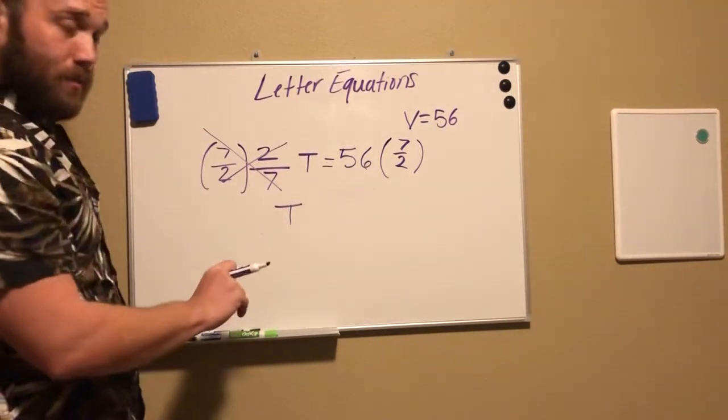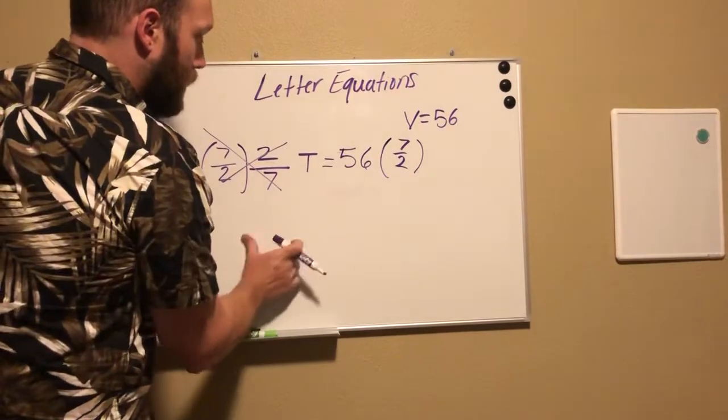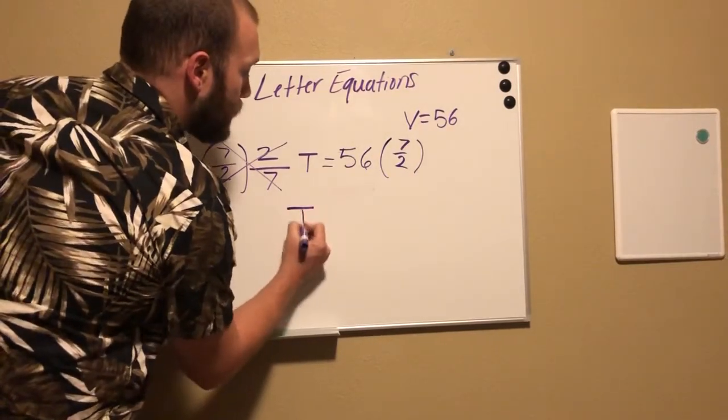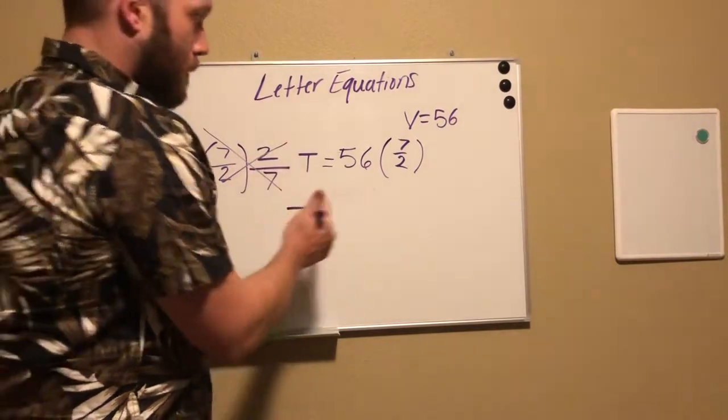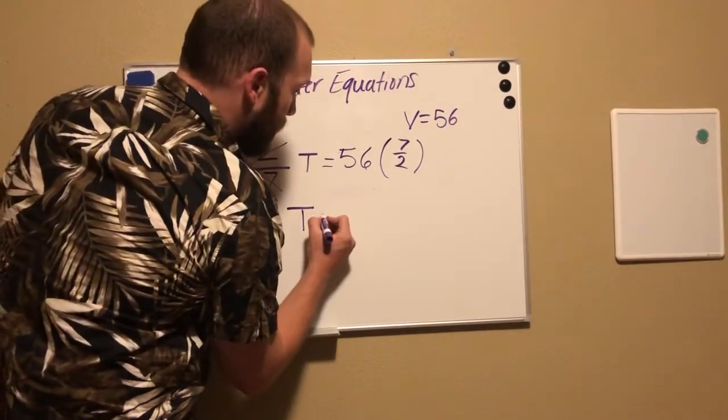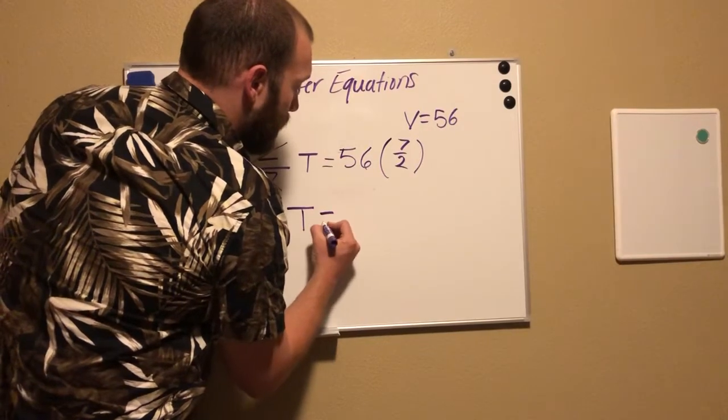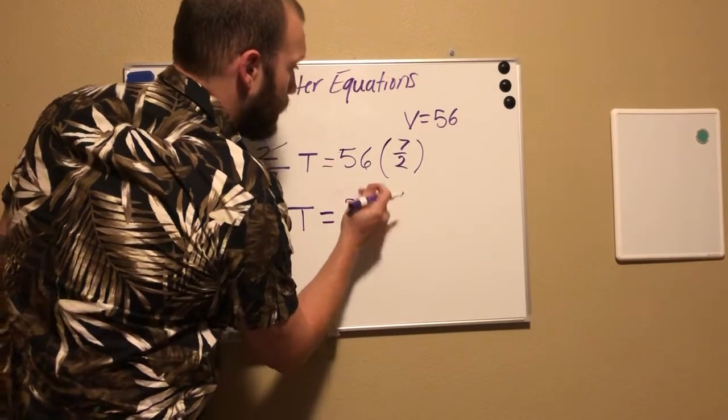Because we know this all together equals one T, or we can just say T, because there's one of them. We don't need to write the number one next to a letter that's there by itself because that represents one. So now we have T equals 56 times seven-halves.